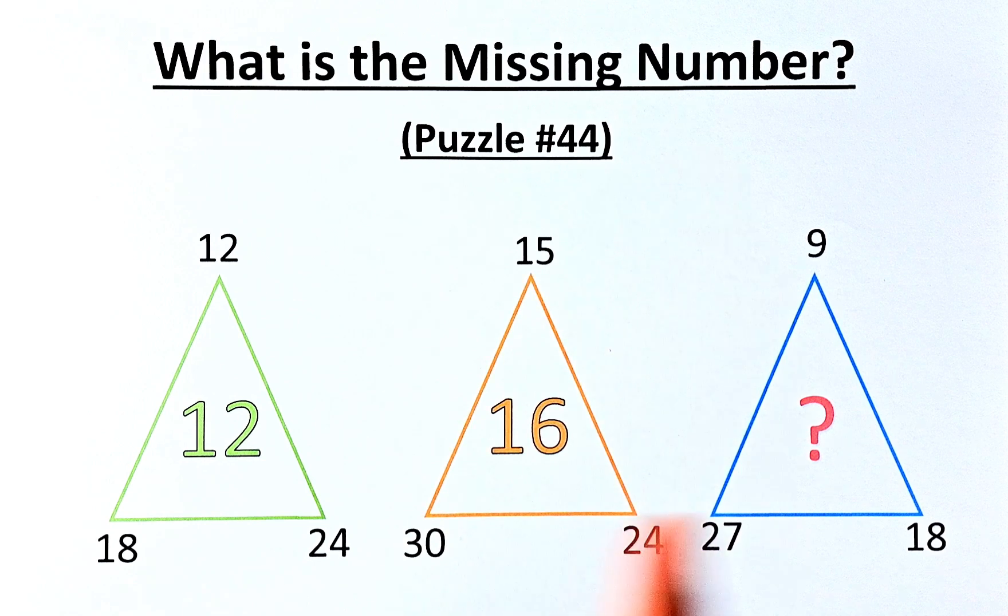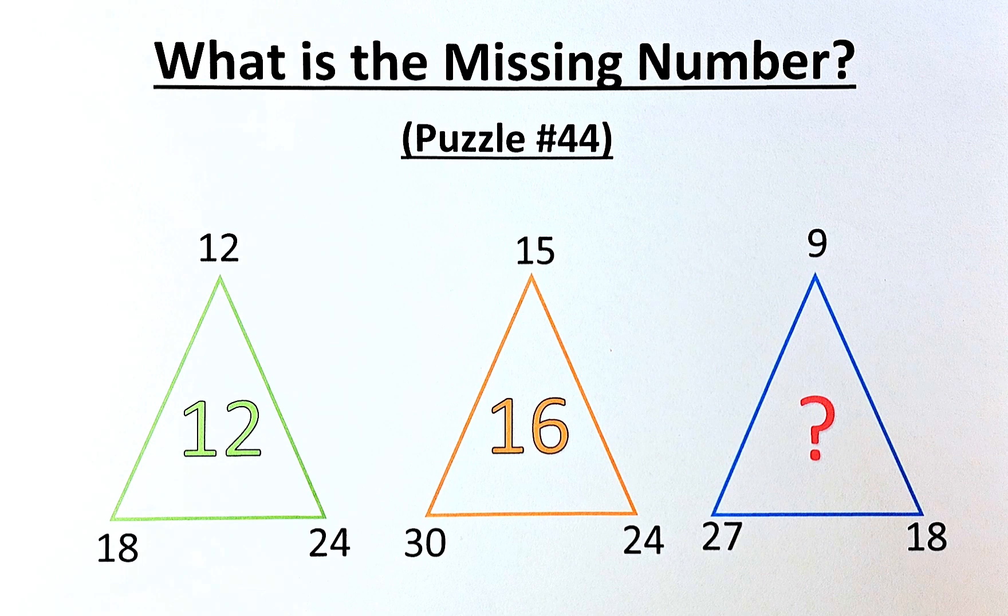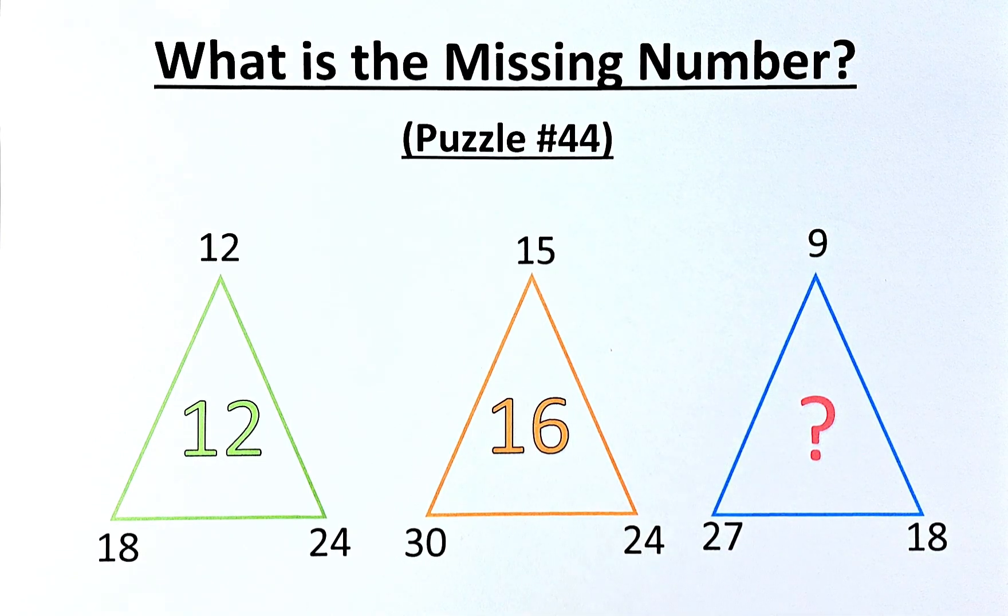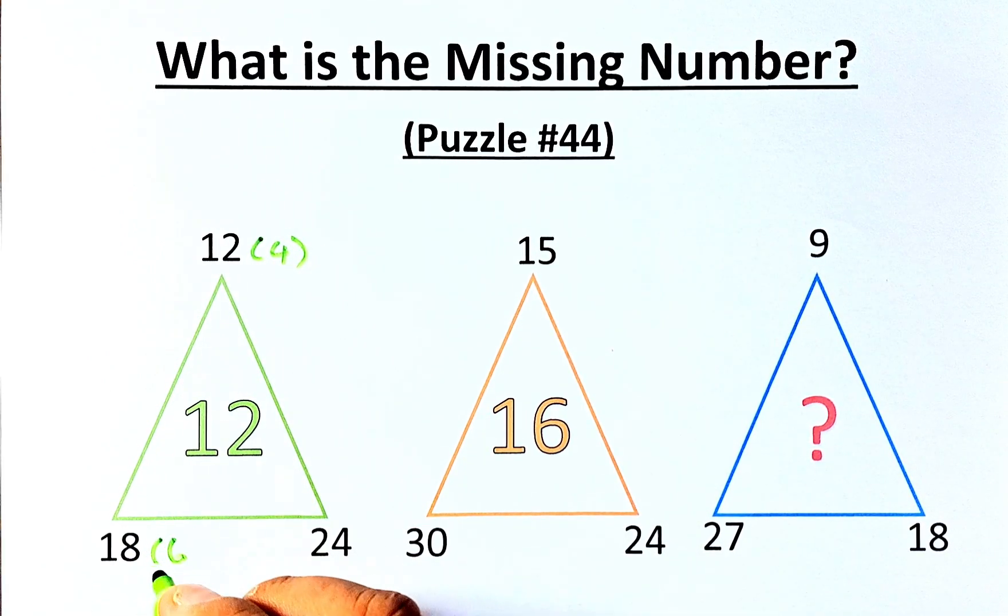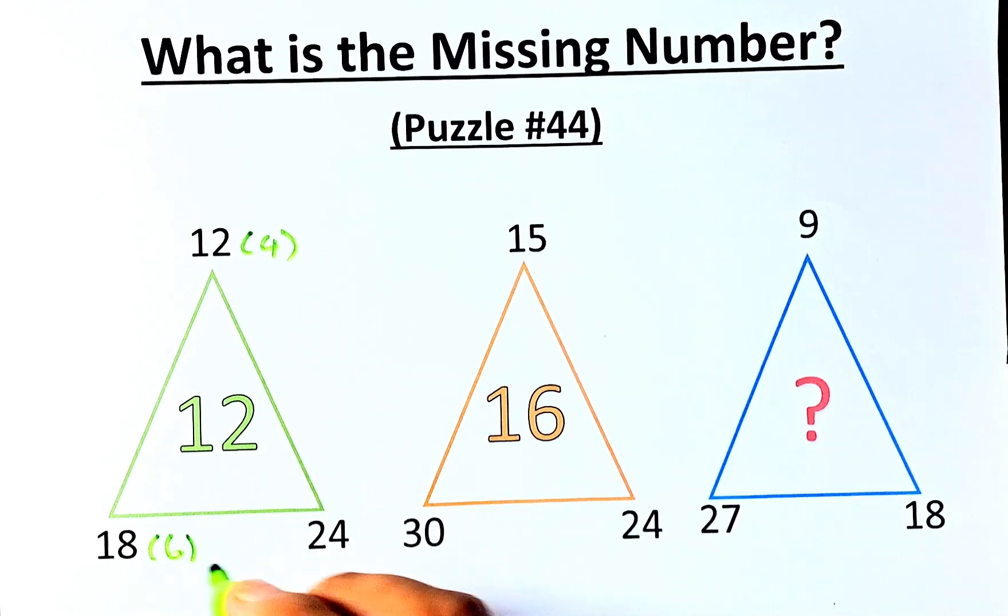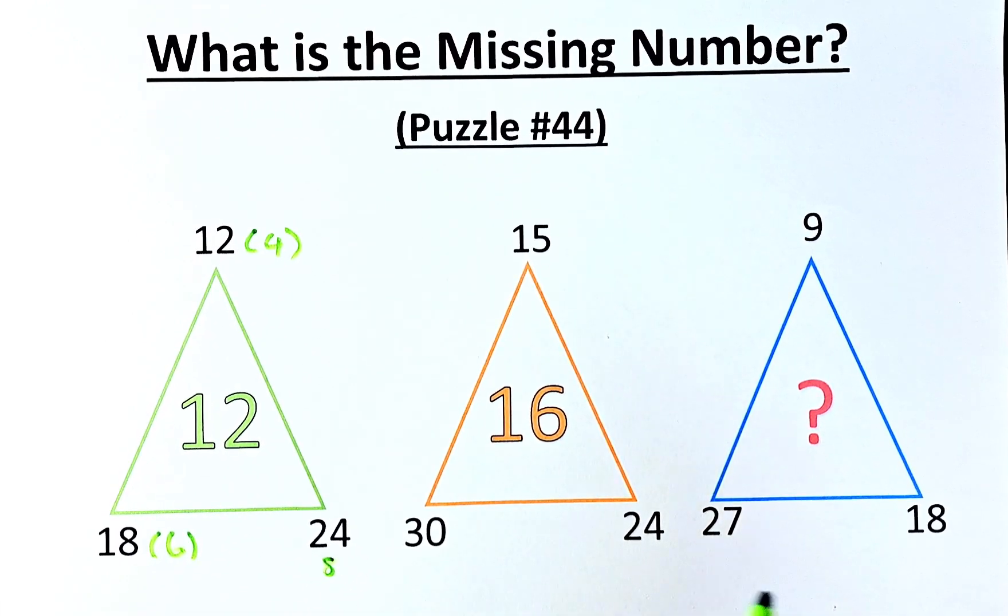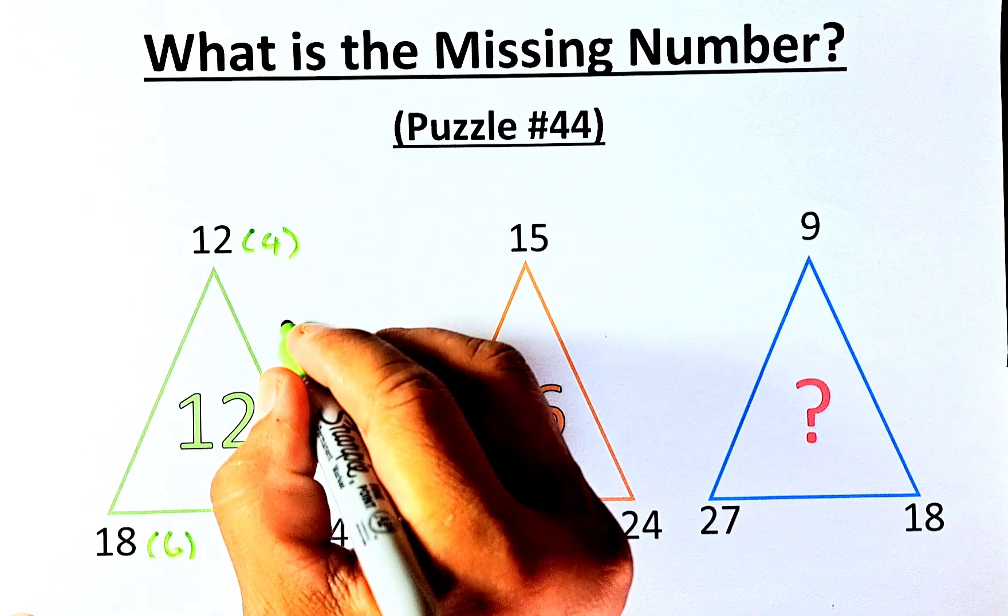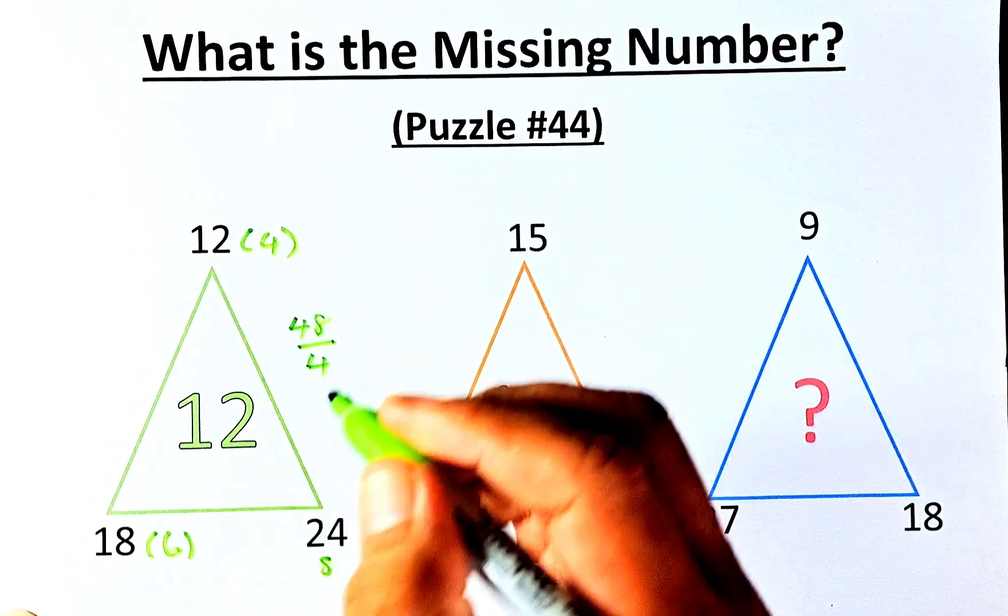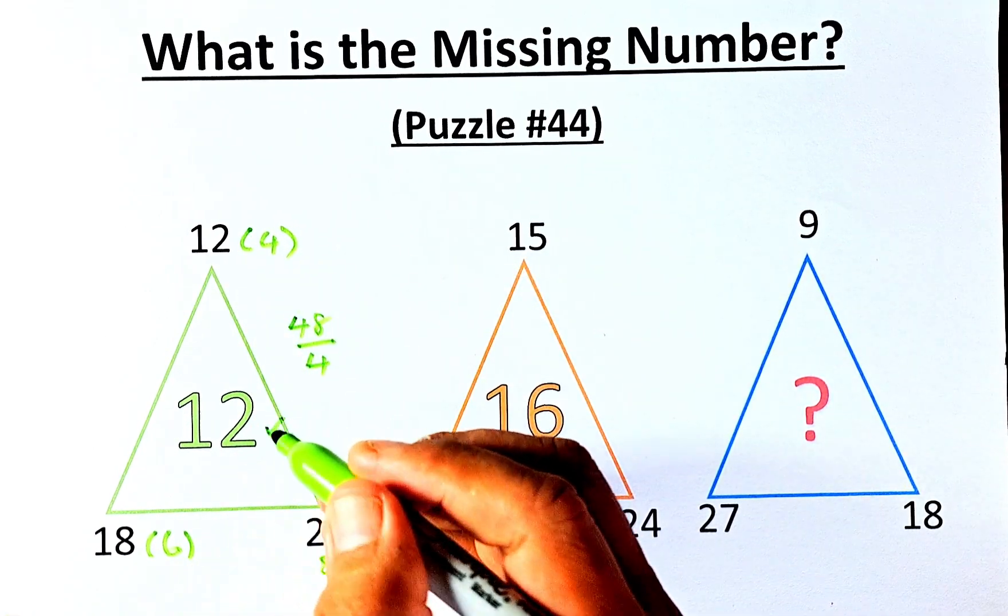To do this, you can see that all of the numbers there are multiples of 3. So the first thing we're going to do is divide all the numbers by 3. So 12 divided by 3 is going to be 4, 18 divided by 3 is going to be 6, and 24 divided by 3 is going to be 8. Now from the first triangle, we can solve it already. So 6 times 8 is going to be 48, 48 divided by 4. So these two numbers you multiply—6 times 8 is 48—divided by 4, and the answer is 12.